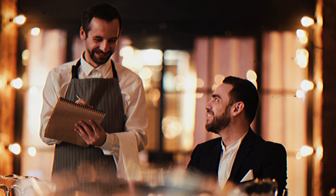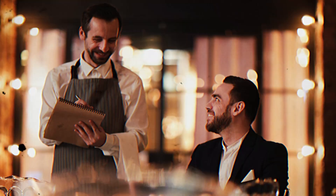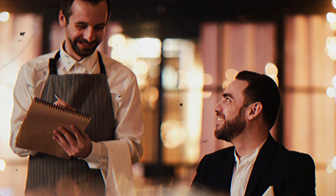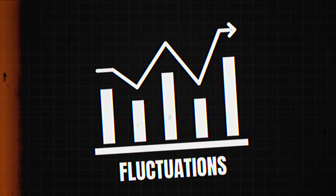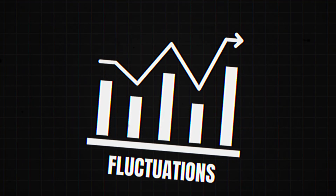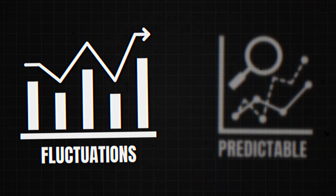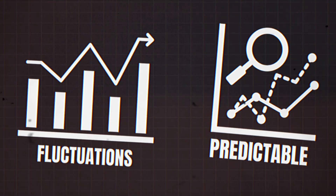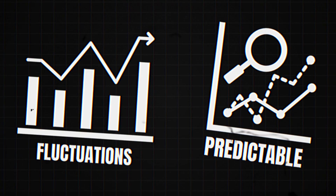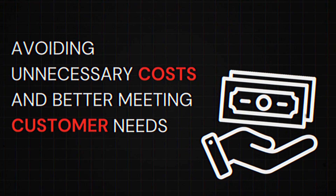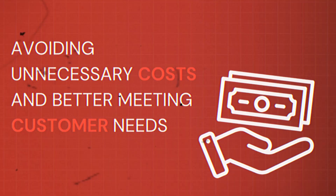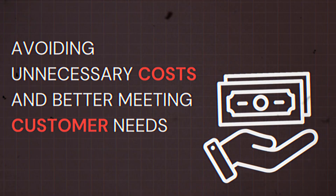Understanding these factors helps businesses figure out why their supply chains might not be working smoothly. By identifying the root causes of these fluctuations, they can take steps to make their supply chains more predictable and efficient, avoiding unnecessary costs and better meeting customer needs.